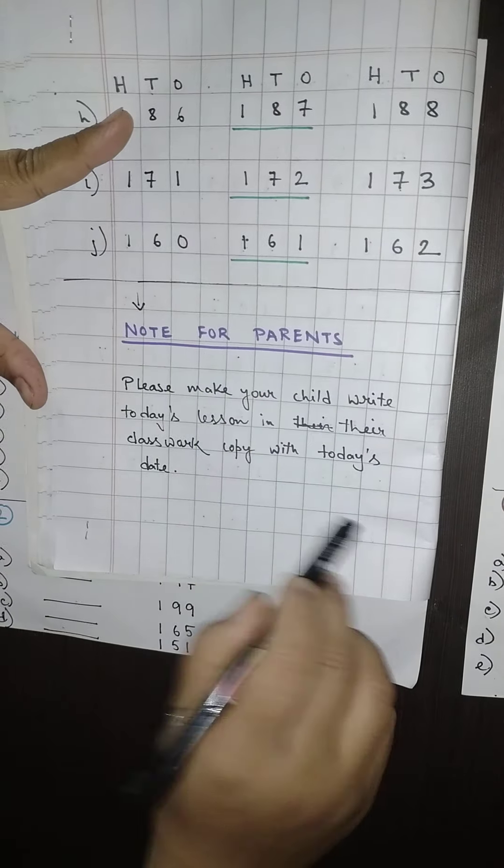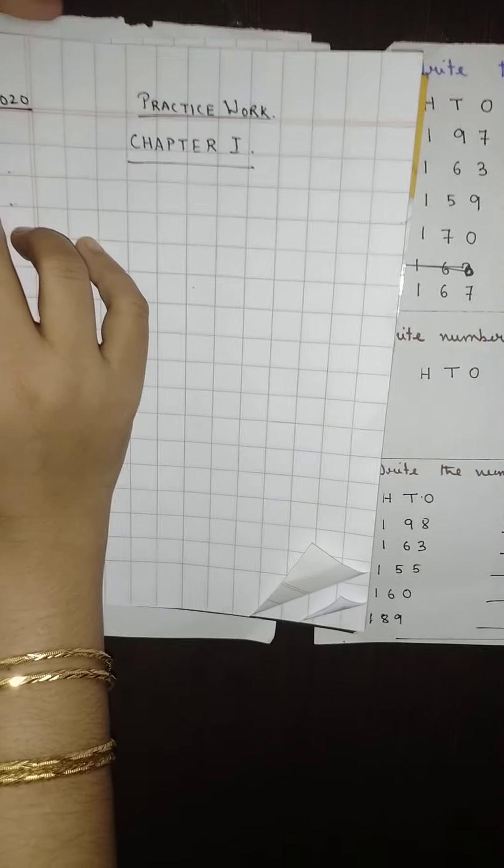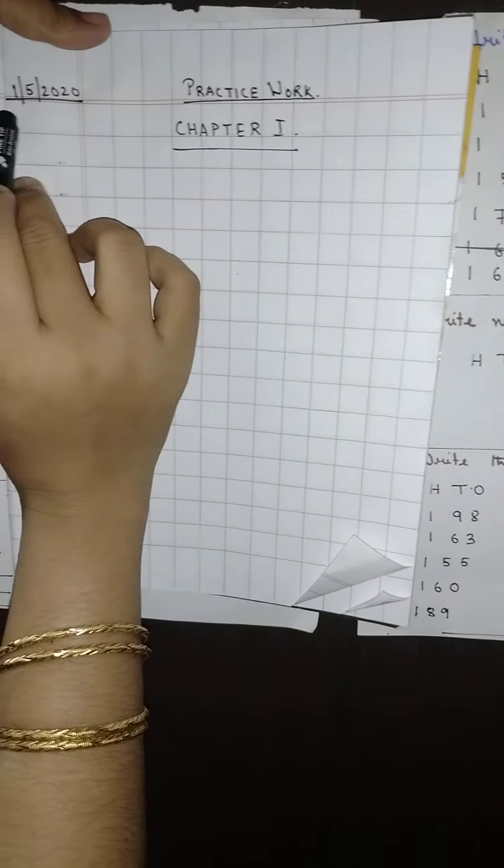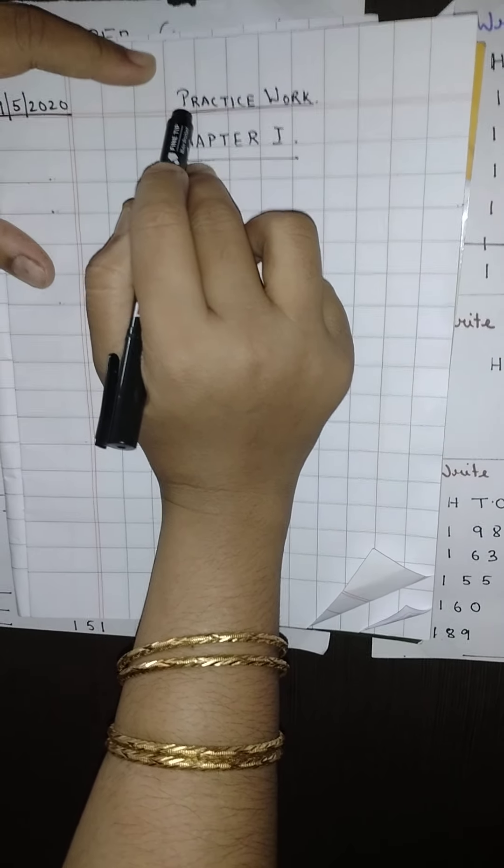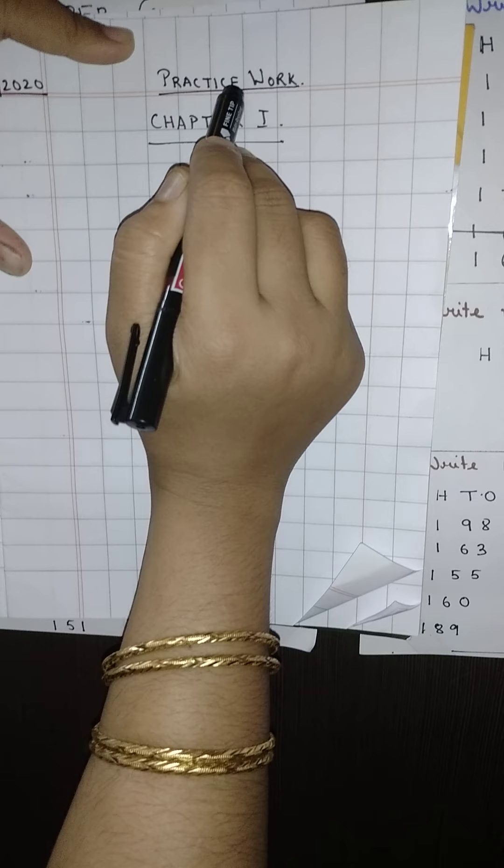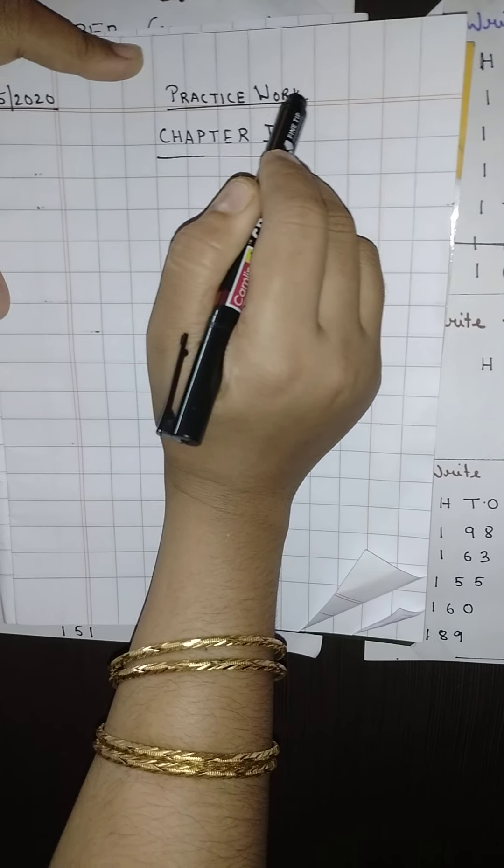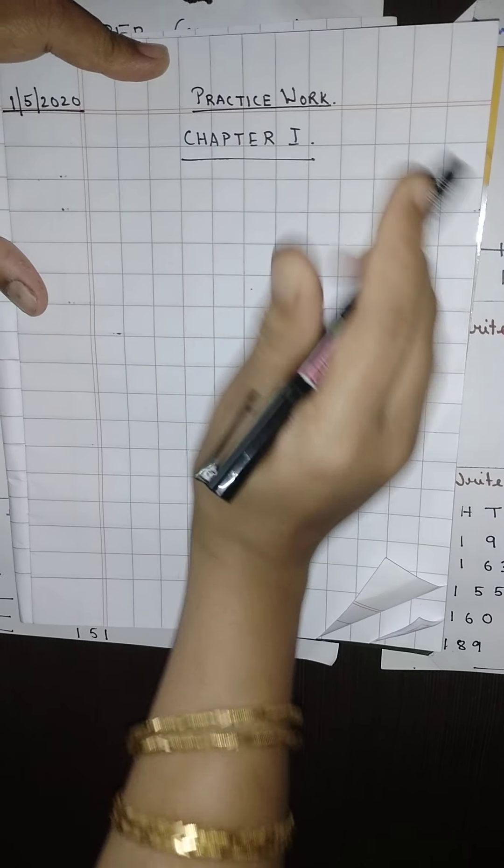Now where we had ended last day, you will be not writing anything in that page. Instead you will go to a new page and put today's date in the left hand side corner, and on the right hand side on the red line you will write PRACTICE, practice work, and under that line you will write Chapter 1.